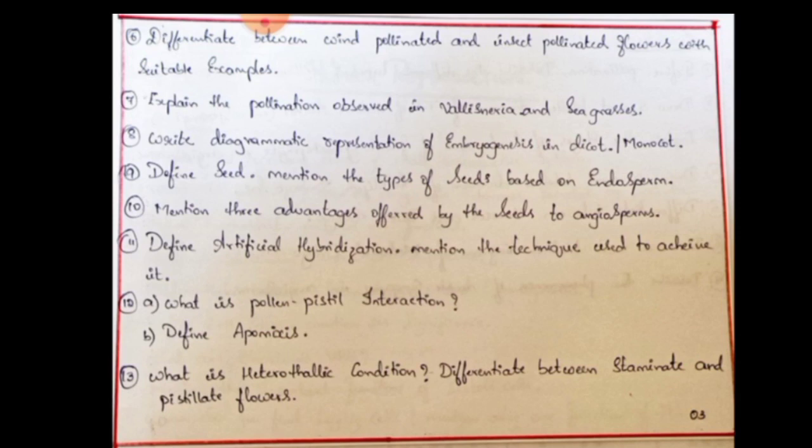Define seed and mention types of seeds based on endosperm — albuminous and non-albuminous, endospermic and non-endospermic seeds. Mention three advantages offered by seeds to angiosperms — this is an expected question. Next: Define artificial hybridization and mention the techniques used to achieve it — this is the most important question. The techniques include bagging, tagging, and emasculation.